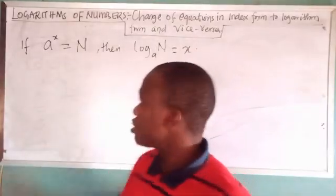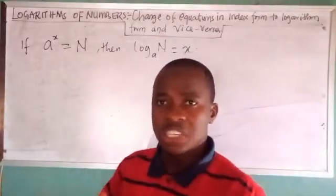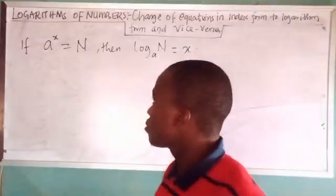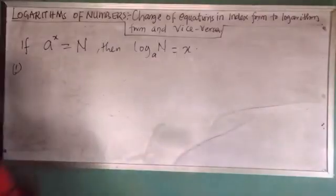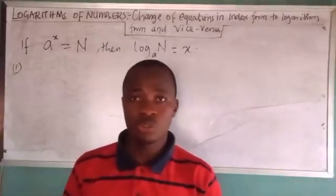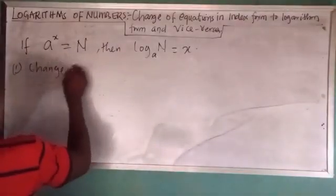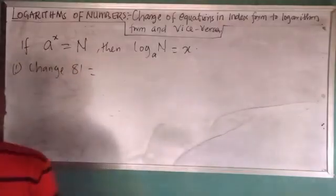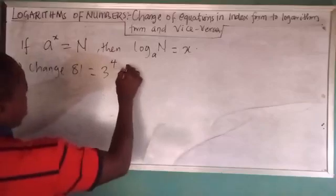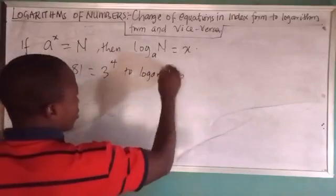This is just like the general expression of changing an index form of an equation to logarithmic form of equation. So now let's quickly look at one example or two so that you'll be able to see what I'm trying to say. Let's say we have: change 81 equals 3 raised to power 4 to logarithmic form.